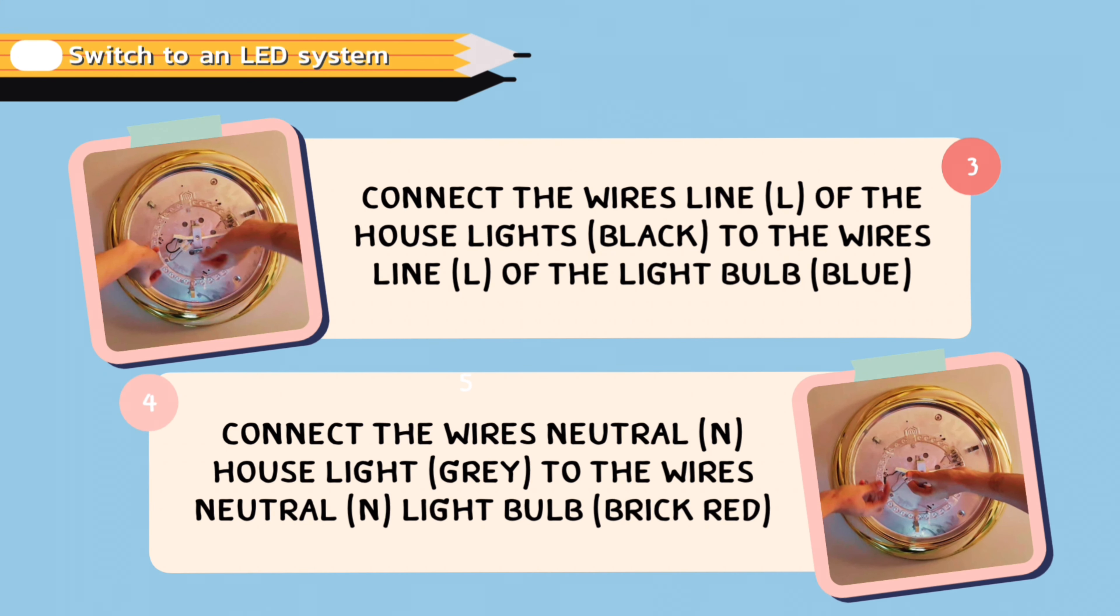Step 4: Connect the wire neutral house lights to the wire neutral light bulb.